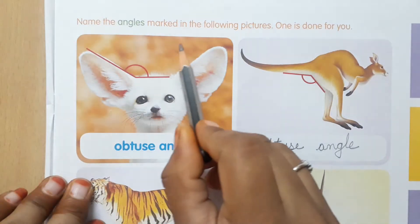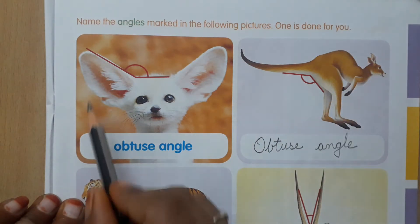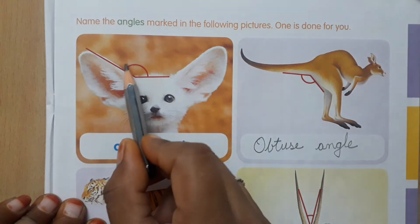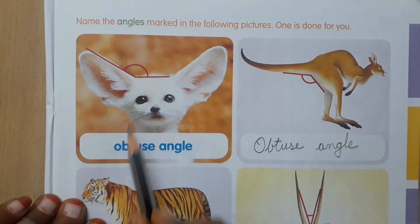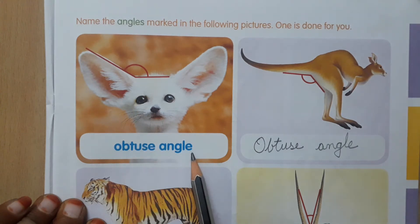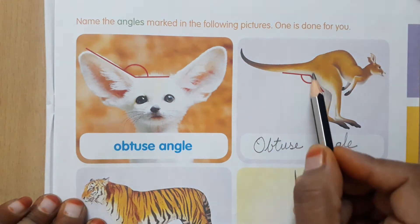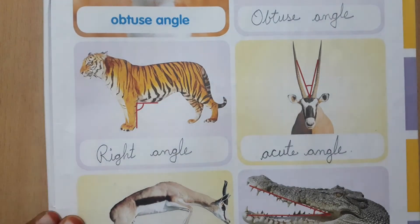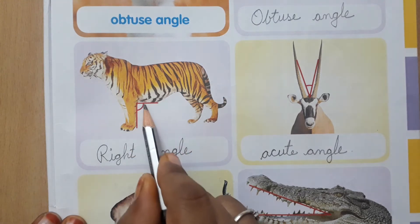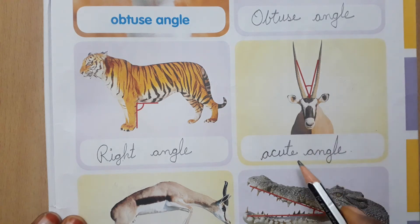Name the angles marked in the following pictures. One is done for you. What is the name for this angle? It is more than 90 degrees and less than 180 degrees, so it is obtuse angle. Next one: the angle formed here is also obtuse angle. Here: right angle. This one: acute angle.